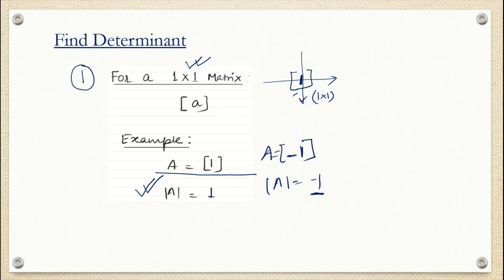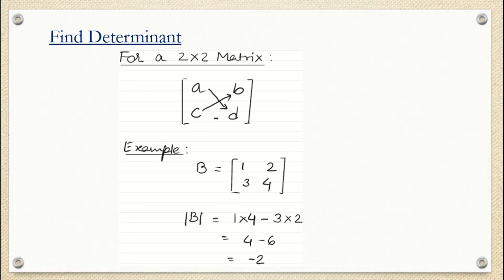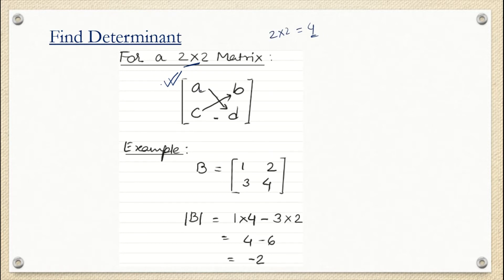Now we are going to see how to find the determinant for a 2×2 matrix. This is the general form of a 2×2 matrix. There are four elements in a 2×2 matrix — two rows times two columns equals four. This is the example of a 2×2 matrix.